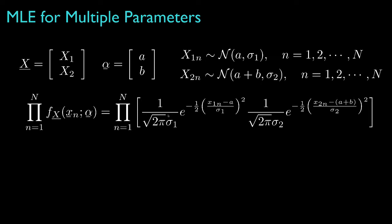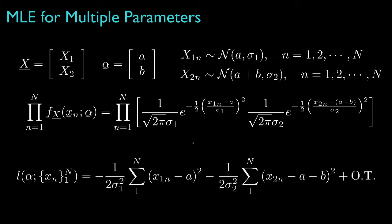The joint density for these data is the product of the corresponding Gaussian densities, so that the log likelihood for the data is the sum of three terms.